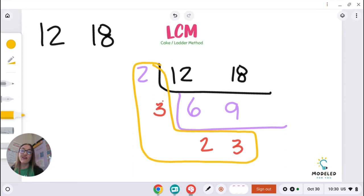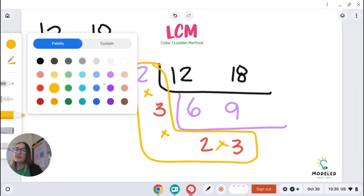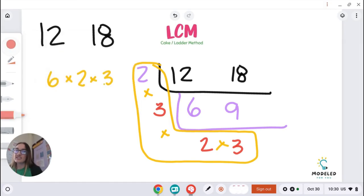Now I have all these numbers in my L. What I have to do with these numbers is I have to multiply them to find our LCM. 2 times 3 gives me 6. So now I have 6 times 2 times 3. So I took that other 2 times 3 from down here and put it up there. So now this is my new equation, or expression, I should say.